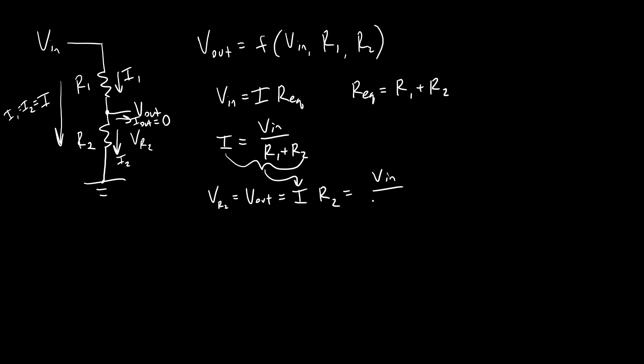V_in over R1 plus R2 times R2, or we're going to rewrite that in the more common format V_out equals R2 over R1 plus R2 times V_in, and that is our equation for a voltage divider.